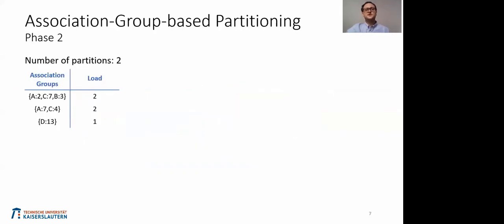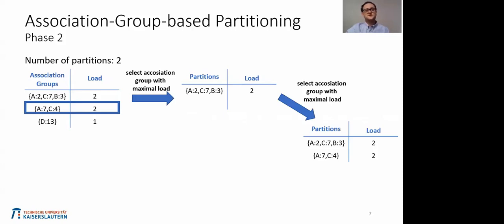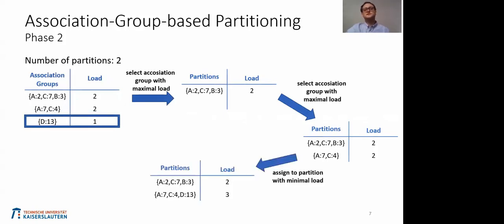In phase two, computed association groups are assigned to available partitions. The algorithm starts by selecting the association group with the highest load and assigns it to a free partition or the partition with the least load. This procedure repeats for subsequent association groups. For the last association group, it is assigned to the partition with the least load. This concludes our algorithm for creating partitions for the input set of documents.